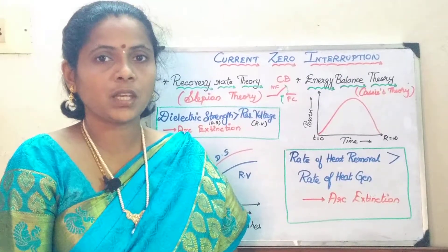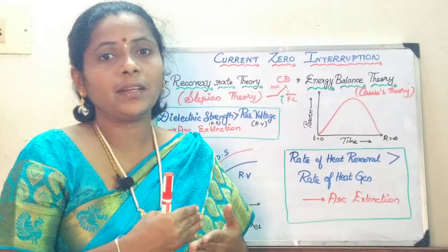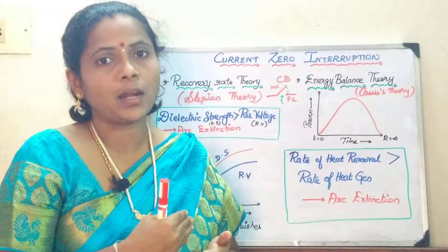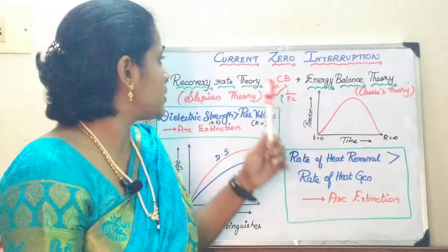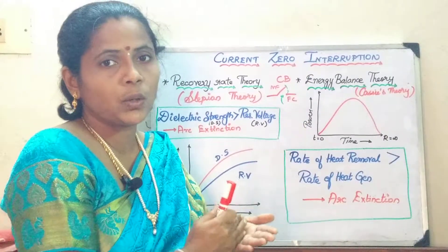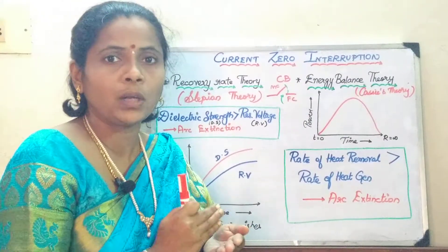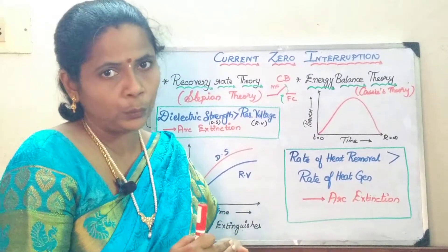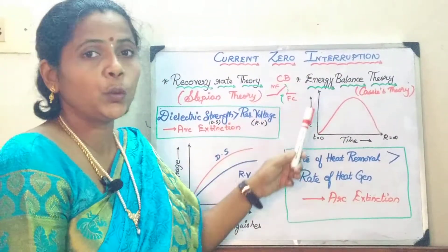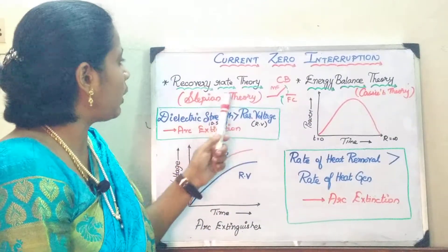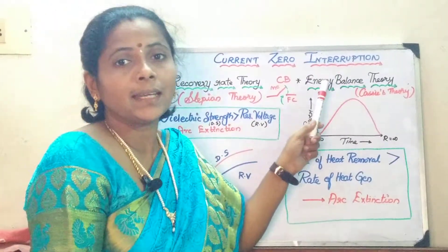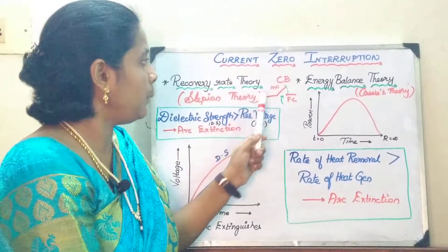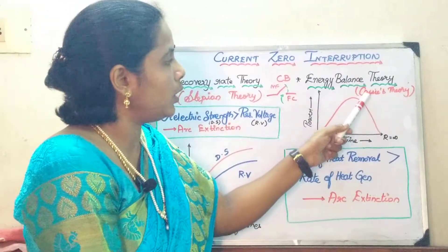In the earlier session, we have seen about the two current interruption methods for circuit breakers. One is the high resistance method, another is the low resistance or current zero interruption. This current zero interruption is usually applied only for AC circuit breakers, where you are trying to quench the arc at natural zero. In this current zero interruption method, you have two types: one is the recovery rate theory, another is called the energy balance theory. The recovery rate theory is also called CPM theory, and the energy balance theory is called Cayce's theory.